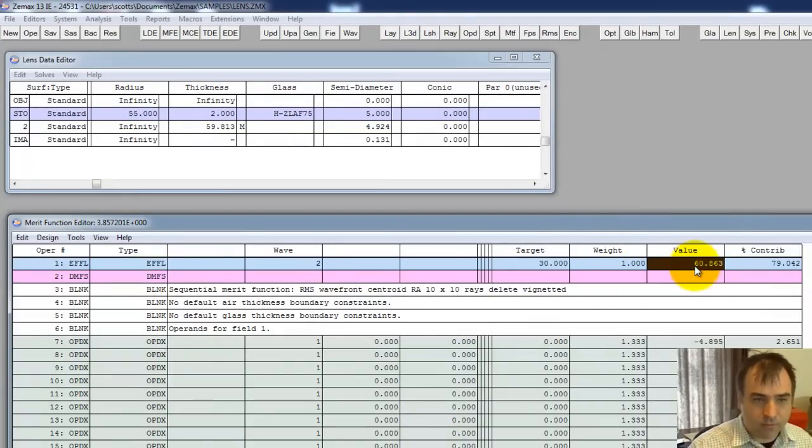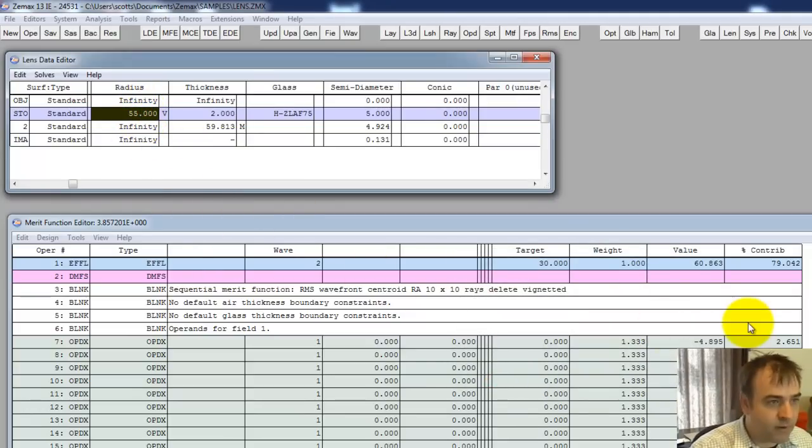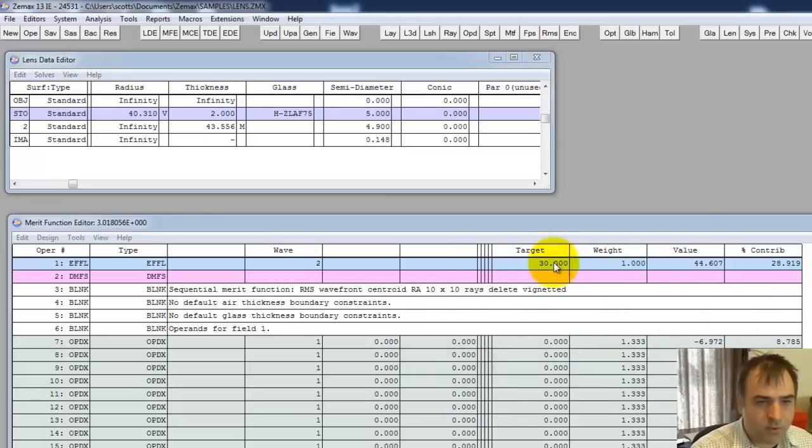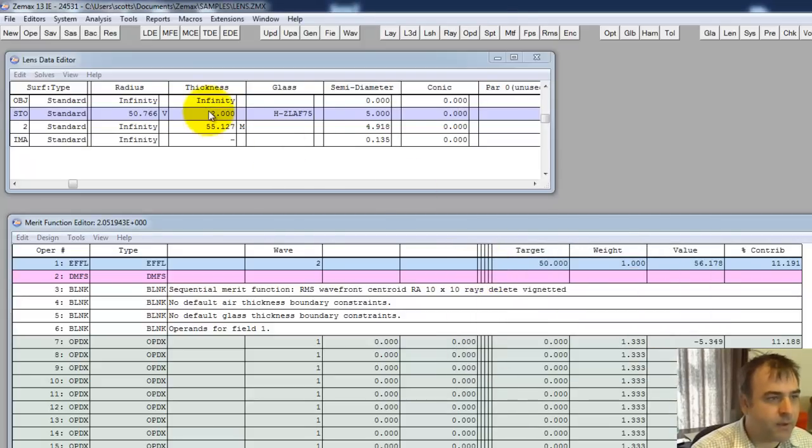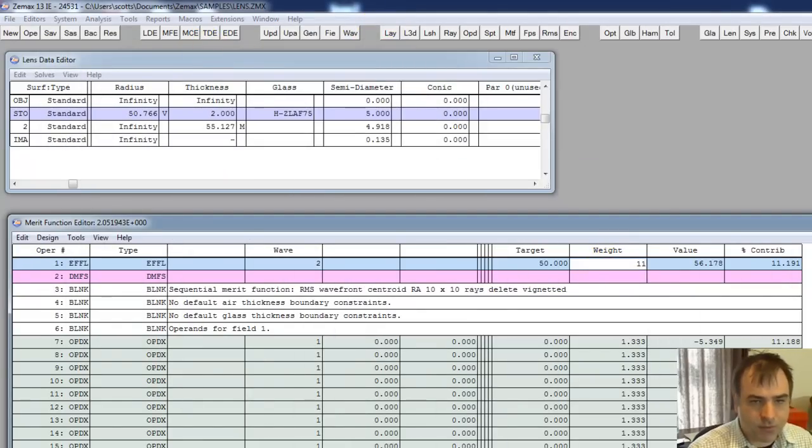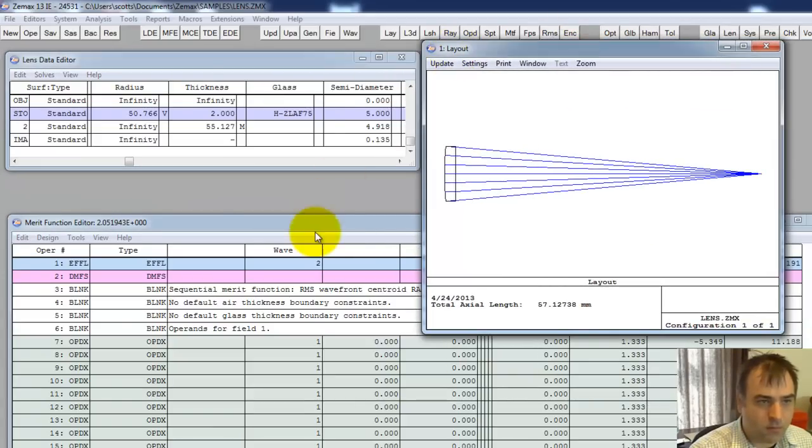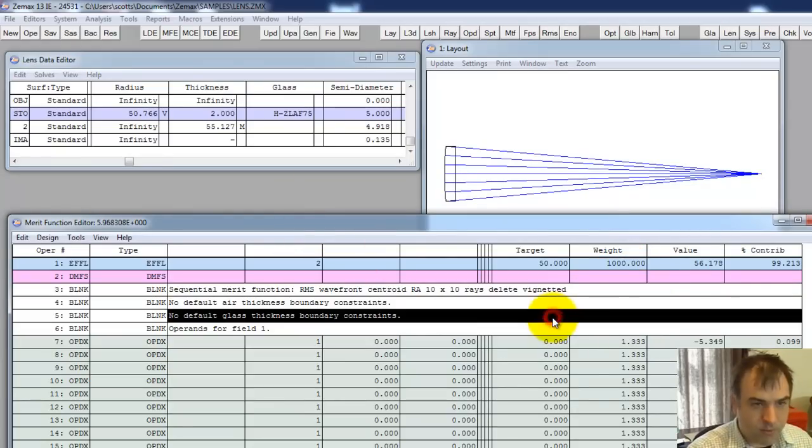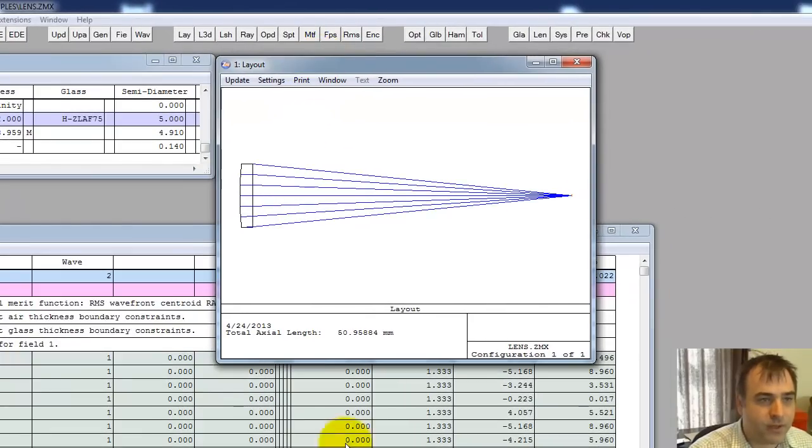The last update of ZMAX changed what your default merit function is called. It's not called default merit function anymore, it's called sequential merit function. I'm just going to do this rectangular array. Right now we have a focal length of 60. No variables, can't optimize. Let's let this vary. Control shift O, optimize. Let's give it a higher value. 1E to the 3, I'm going to go nuts there, drive it to the right focal length. So we're roughly there. There's our lens, it's an F5 lens with this HZLAF75.